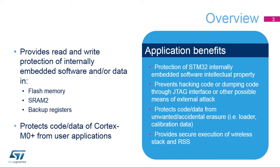These features can prevent the reading or writing of code and/or data through the JTAG debugger, end-user code, or SRAM Trojan code. A new protection memory feature is dedicated to the root security services, or RSS, and the wireless stack running on the Cortex-M0 Plus core.